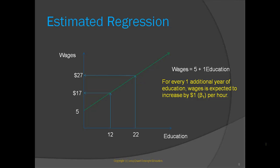How do we interpret beta 0, the intercept term? When education is equal to 0, wages is expected to be beta 0 dollars per hour. In our case, beta 0 is equal to $5. So when education is equal to 0, wages is expected to be $5 per hour. Beta 0 in the wages and education context may be interpreted as a minimum wage. If an individual had zero education, he or she is expected to at least get paid $5 an hour.